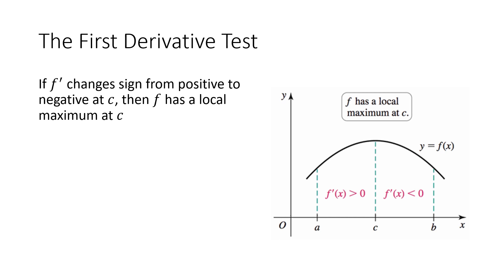Let's talk about this in a little more detail. The first derivative test says if your derivative sign changes from positive to negative, then f has a local maximum — meaning my slope was positive, then the slope was zero or undefined, and then after that the slope was negative. My function was going up, then it was going down: local max.